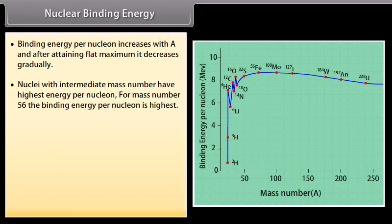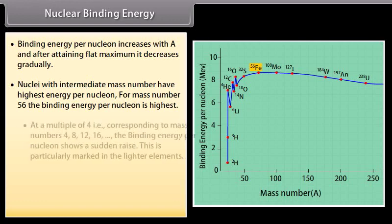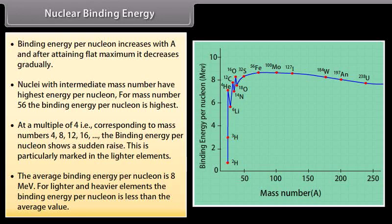Binding energy per nucleon increases with A and after retaining flat maximum it decreases gradually. Nuclei with intermediate mass number have highest energy per nucleon. For mass number 56, the binding energy per nucleon is highest. At a multiple of 4, that is corresponding to mass numbers 4, 8, 12, and 16, the binding energy per nucleon shows a sudden raise. This is particularly marked in the lighter elements. The average binding energy per nucleon is 8 MeV. For lighter and heavier elements, the binding energy per nucleon is less than the average value.